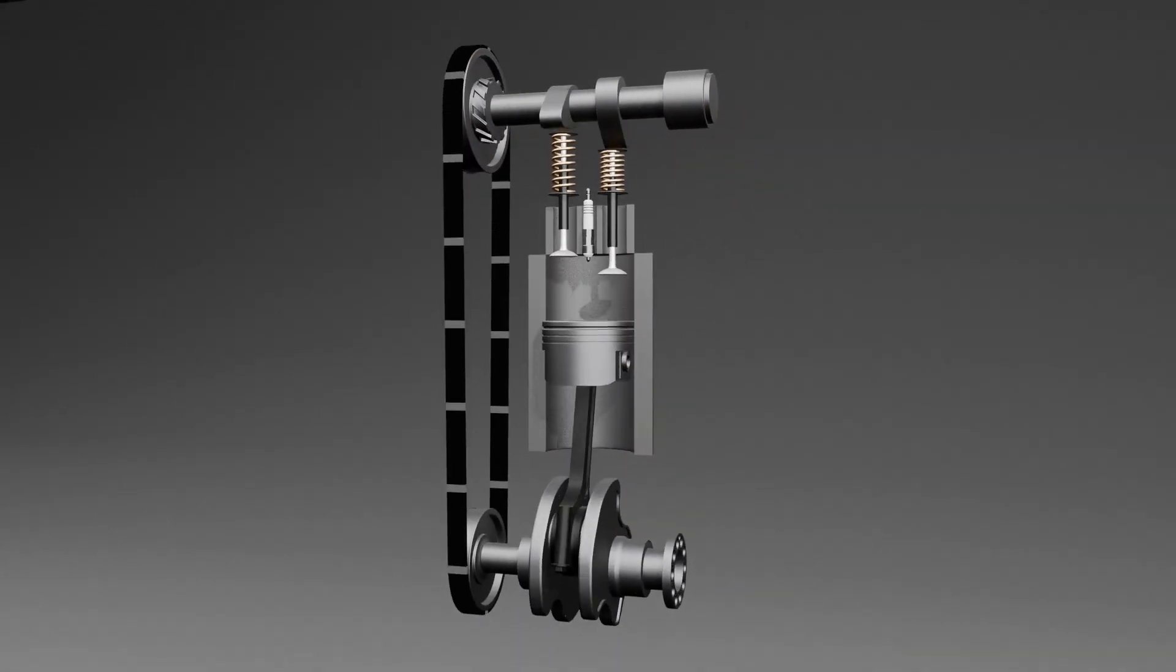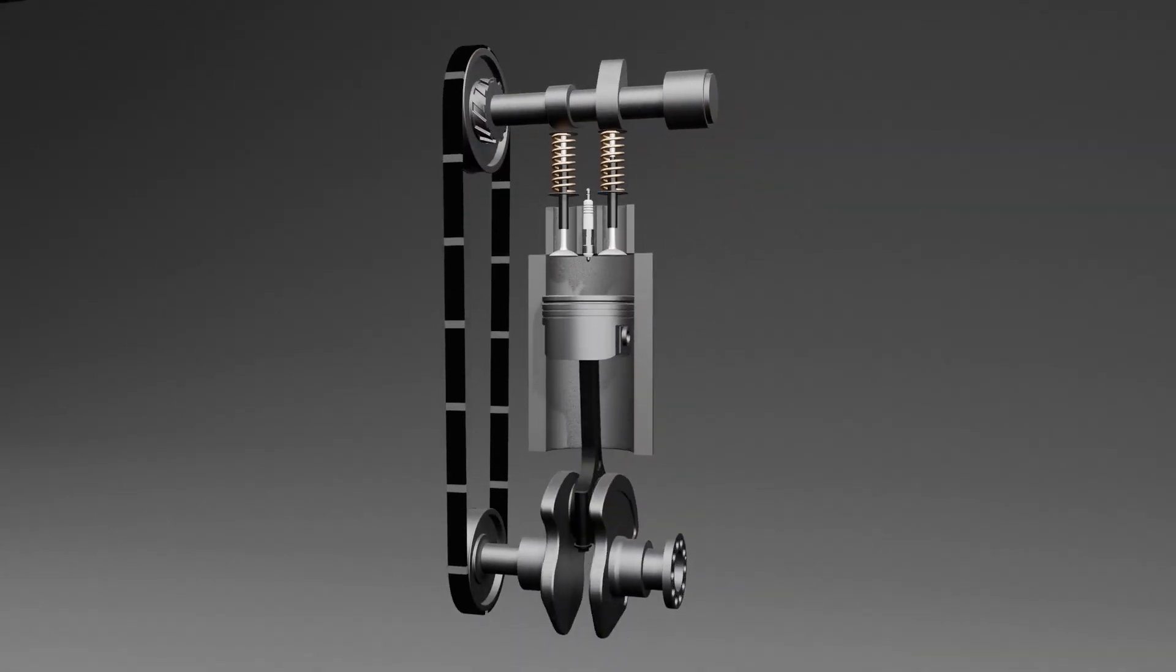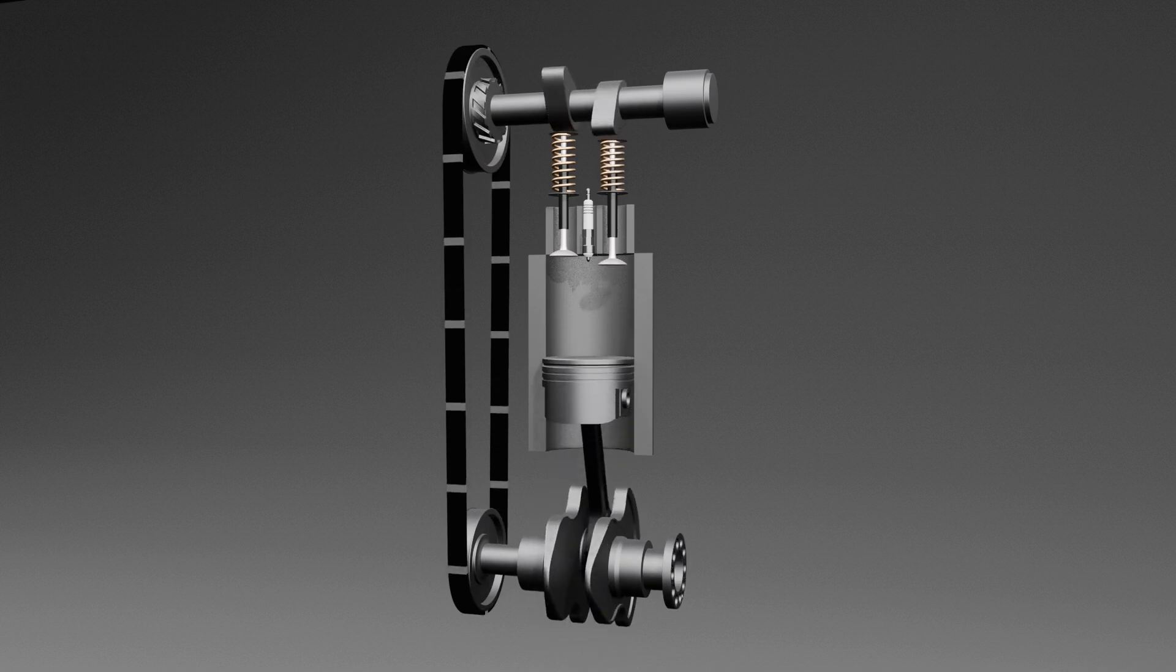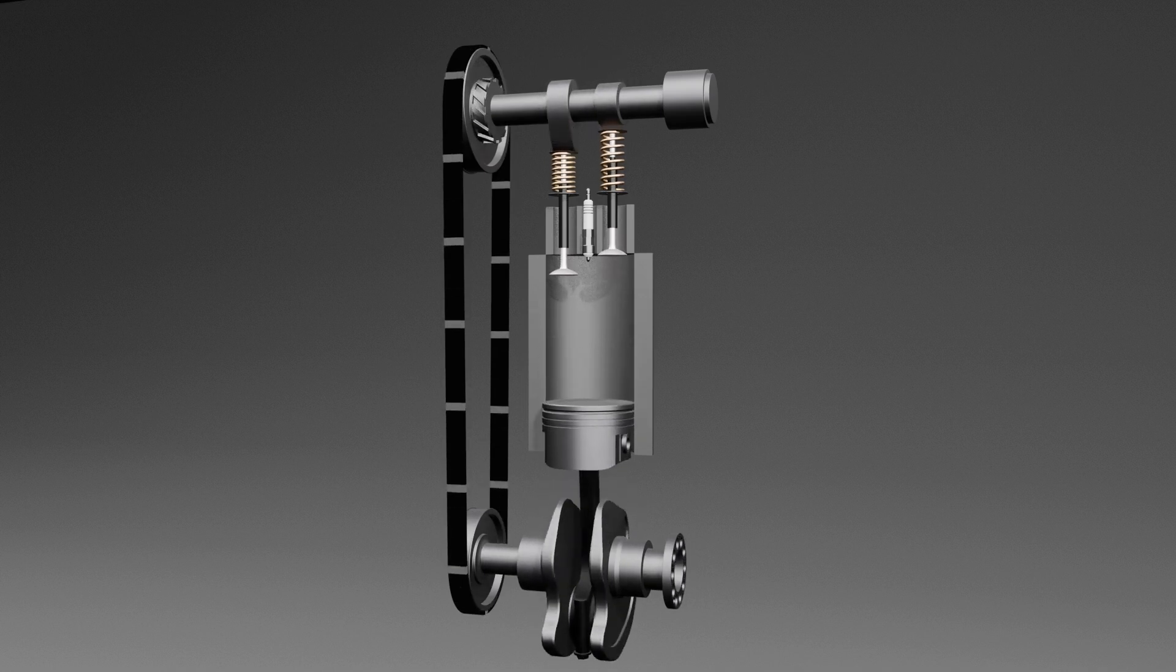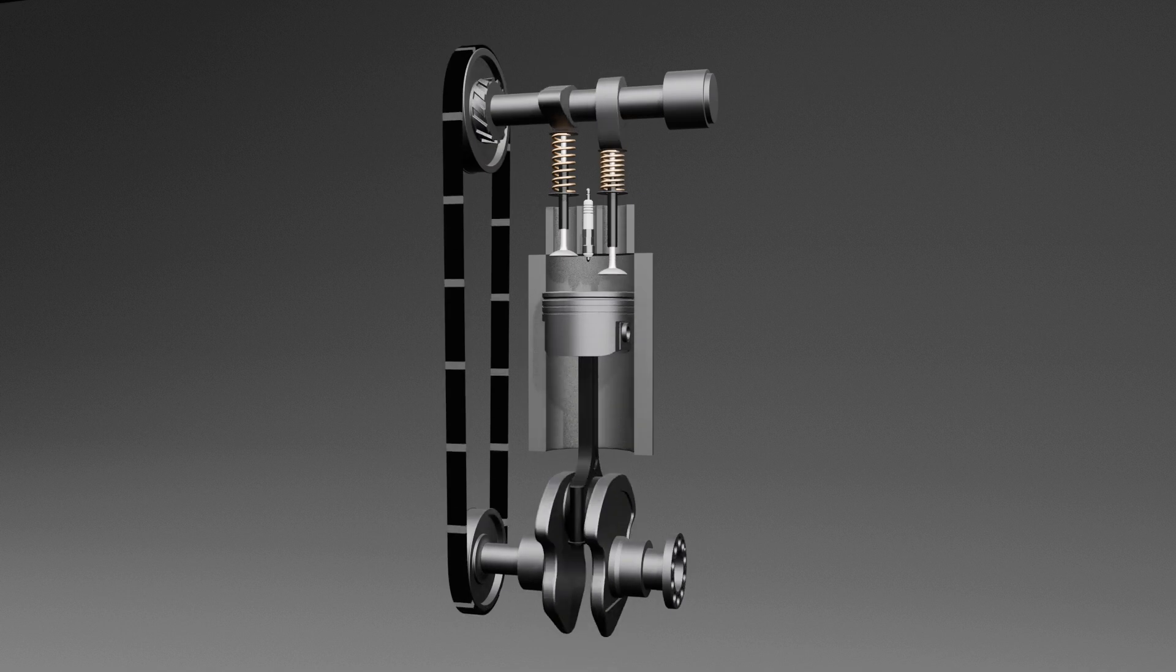The cam belt takes power from the crankshaft and uses it to rotate the camshaft at the top. Now that we understand the main components, let's examine how they work together in a four-stroke engine.